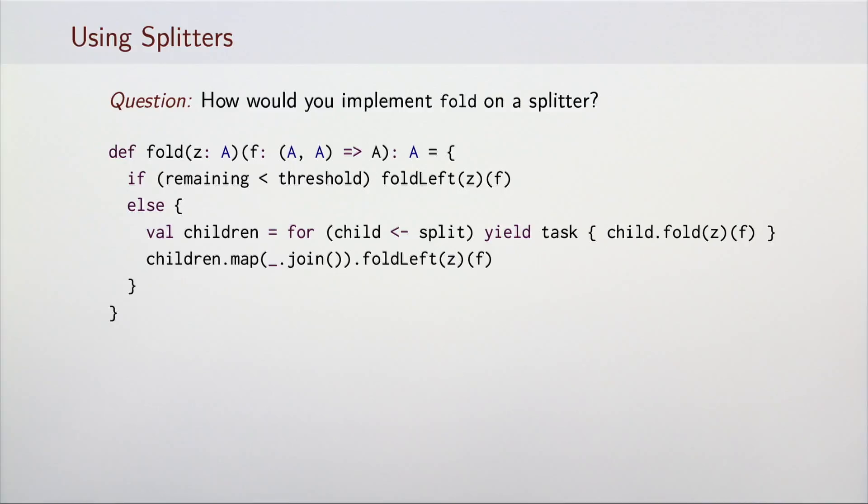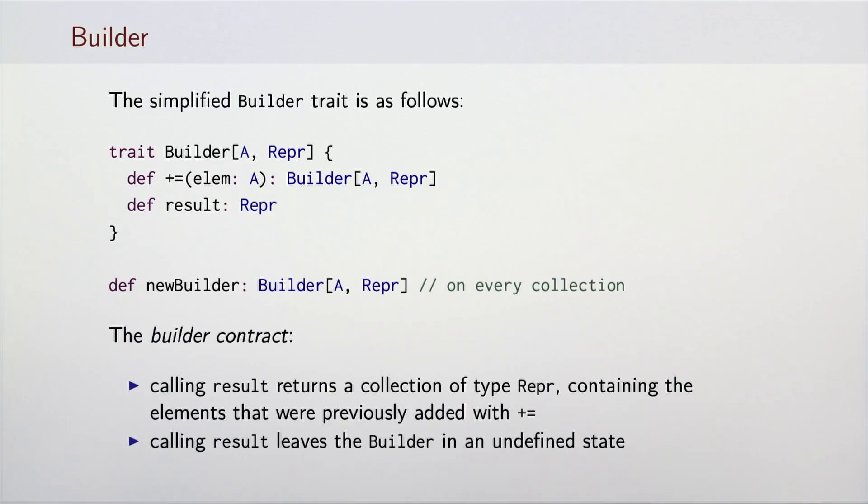However, this solution returns correct values. Builders are abstractions used for creating new collections. Roughly speaking, the builder trait is as follows. It has two type parameters a and wrapper, where a is the type of the elements that we can add to the builder, and wrapper denotes the type of the collection that the builder creates. It has a plus equals method used to add an element to the builder, and a result method that returns a collection. Each collection must implement the new builder method, which is used to build a new collection of the same type.